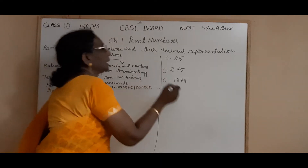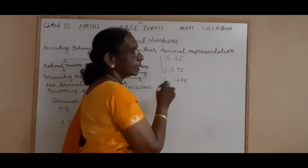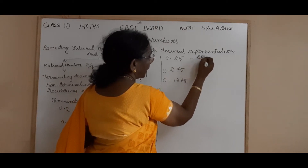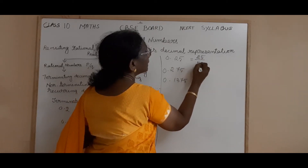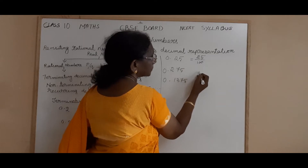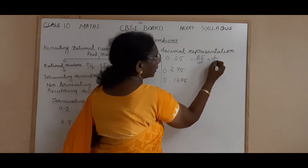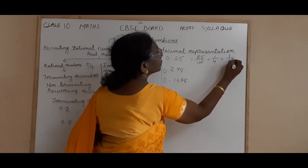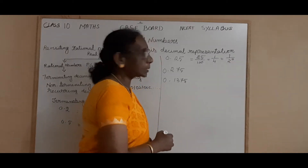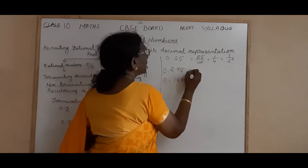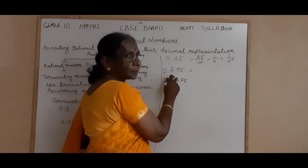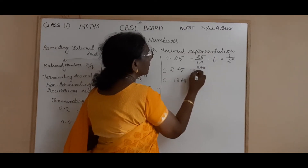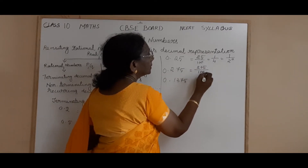Now here, for 0.25, you have got two decimal places. So what will be the denominator? 25 by 10 squared, that is 100. And if you simplify, you are getting 1 by 4, that is 1 by 2 squared. And for 0.125 — three decimal places — so the denominator should be 10 cubed.